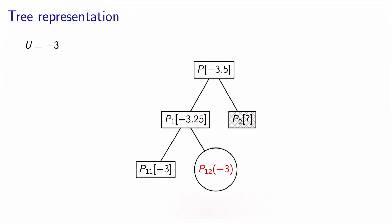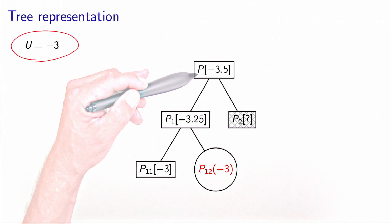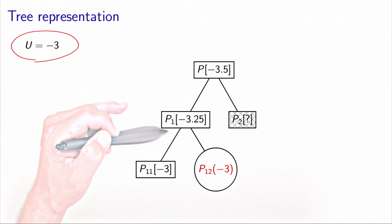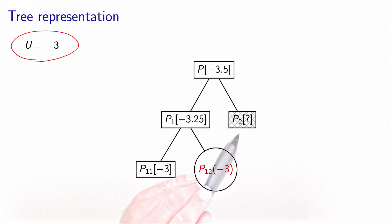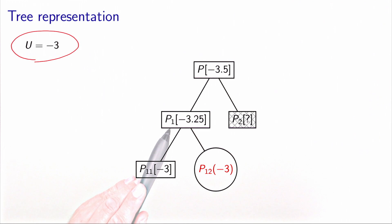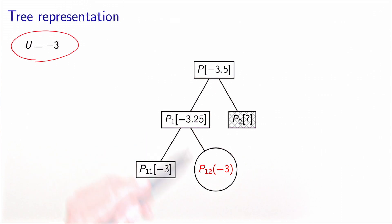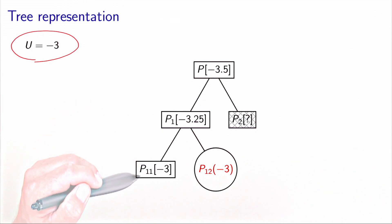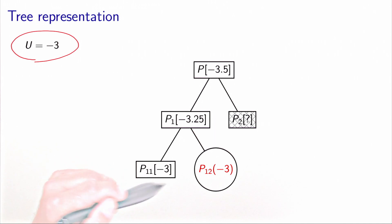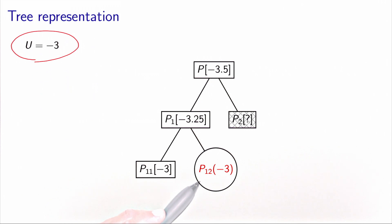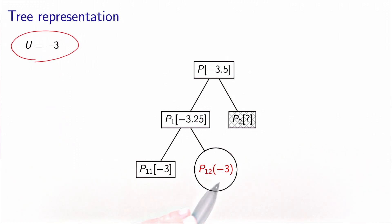We update the tree with the new upper bound of minus 3. We had calculated a lower bound on P, separated P into P1 and P2, with P2 infeasible. Working on P1, we calculated its lower bound, then separated it into P11 and P12. P11 has a lower bound of minus 3, and P12 has been solved to optimality, shown with a circle node and regular brackets.